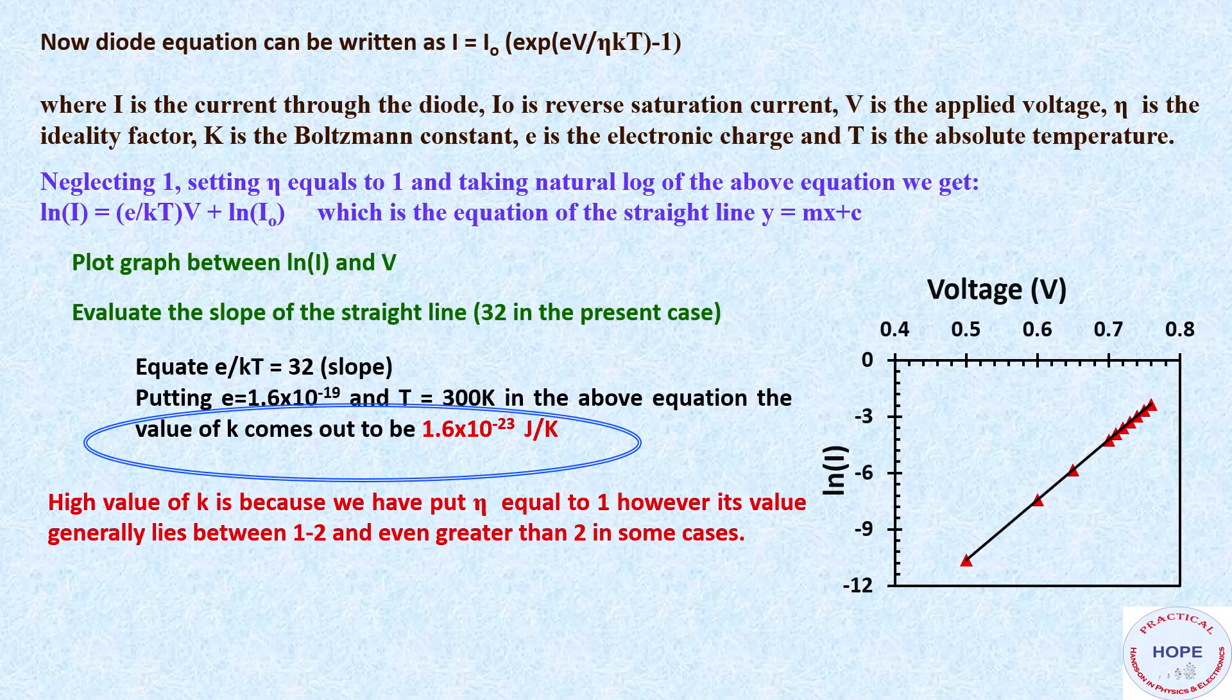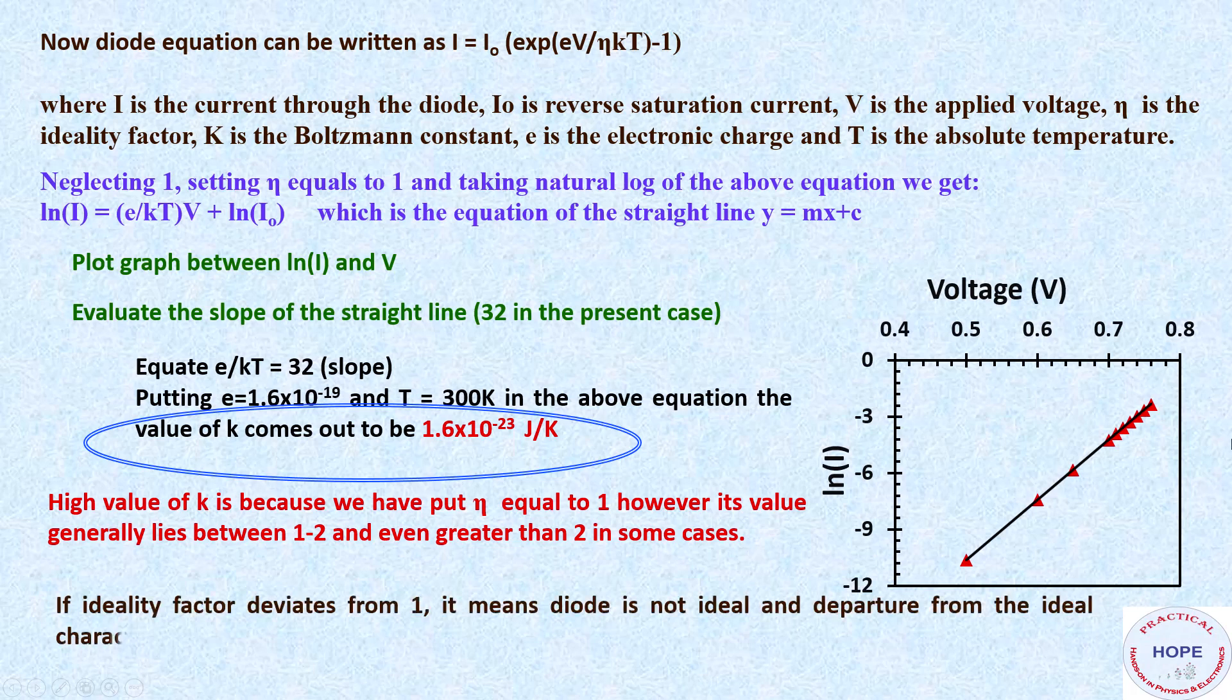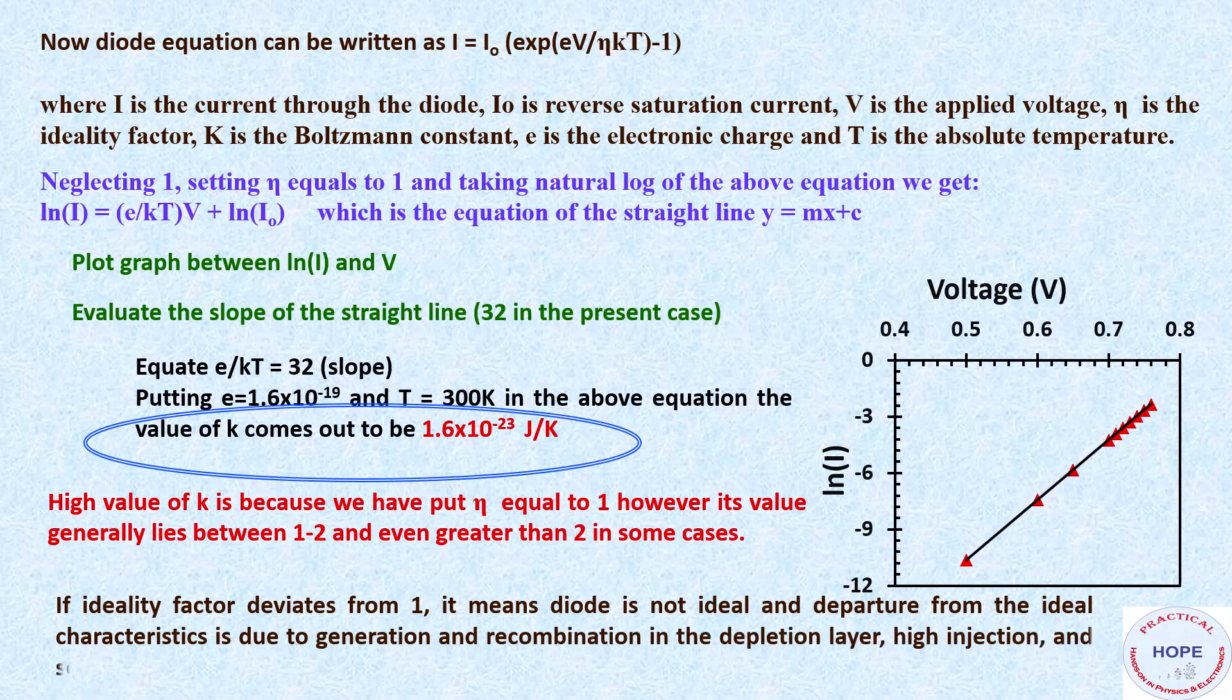It is because high value of k is because we have put eta equals to 1. However, its value generally lies between 1 and 2 and even greater than 2 in some cases. If ideality factor deviates from 1, it means diode is not ideal and departure from the ideal characteristics is due to the generation and recombination in the depletion layer, high injection and also due to series resistance effects.